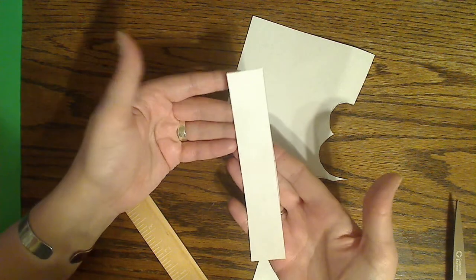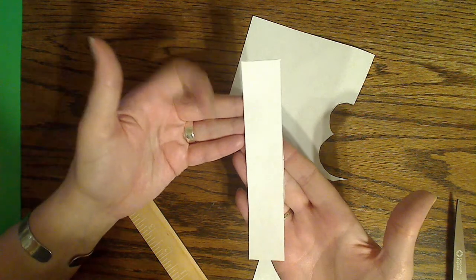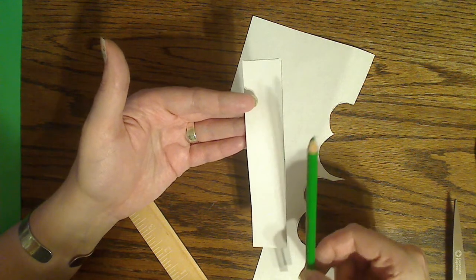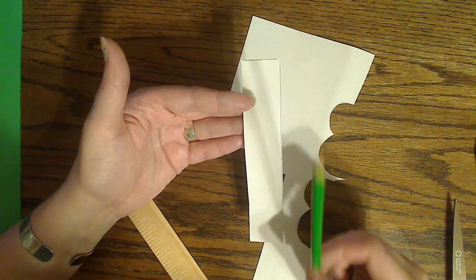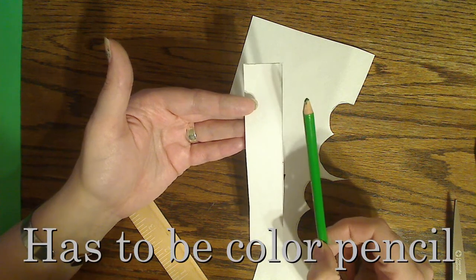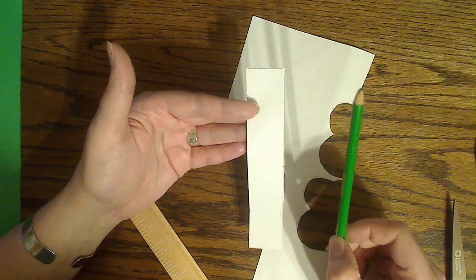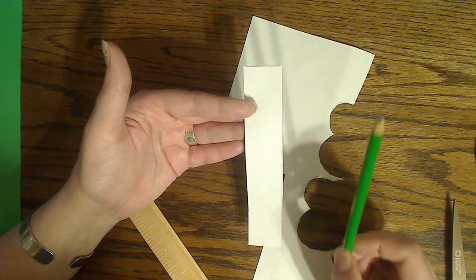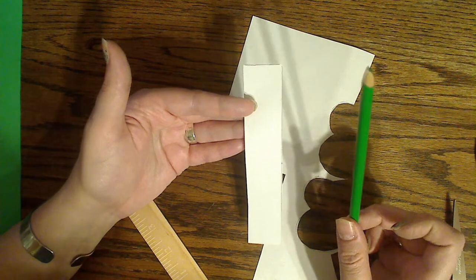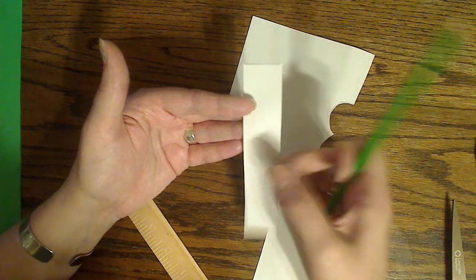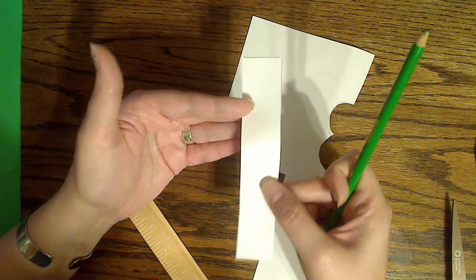Alright, if you want to leave your paper white, you can. If you want to color it whatever color you want to, you can. But today, it has to be a colored pencil. Crayon does not work. Markers does not work. And paint would not work. It needs to be the lightness of the colored pencil because your paper has to be super, super light.